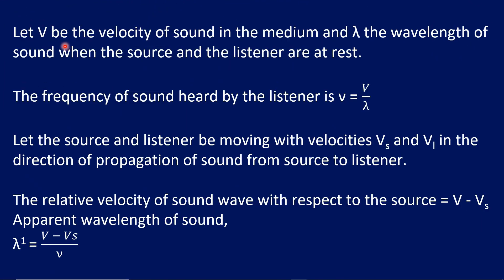Let V be the velocity of sound in the medium and lambda be the wavelength of sound when the source and listener are at rest. V is the velocity and lambda is the wavelength. The frequency of sound heard by the listener is nu, where nu is equal to V divided by lambda. We know the expression V is equal to nu times lambda.